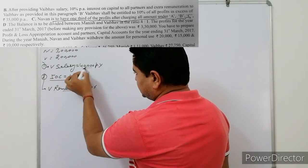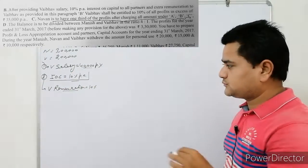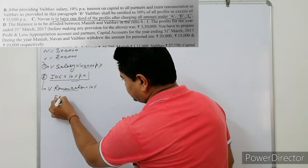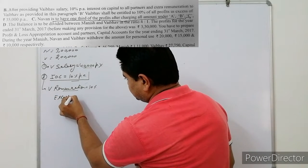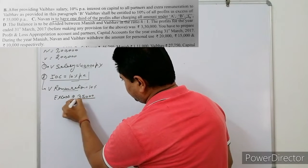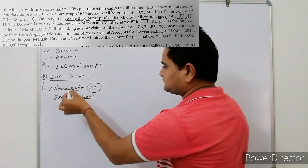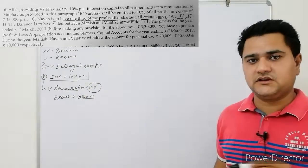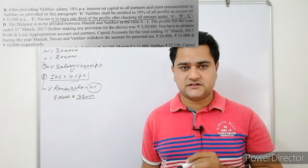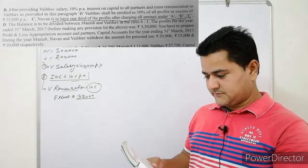After deducting salary and interest on capital from profit, Weibo gets remuneration of 10% on profit in excess of Rs.35,000. Since it is 'after,' the rate will be added. So it will be 10/110.